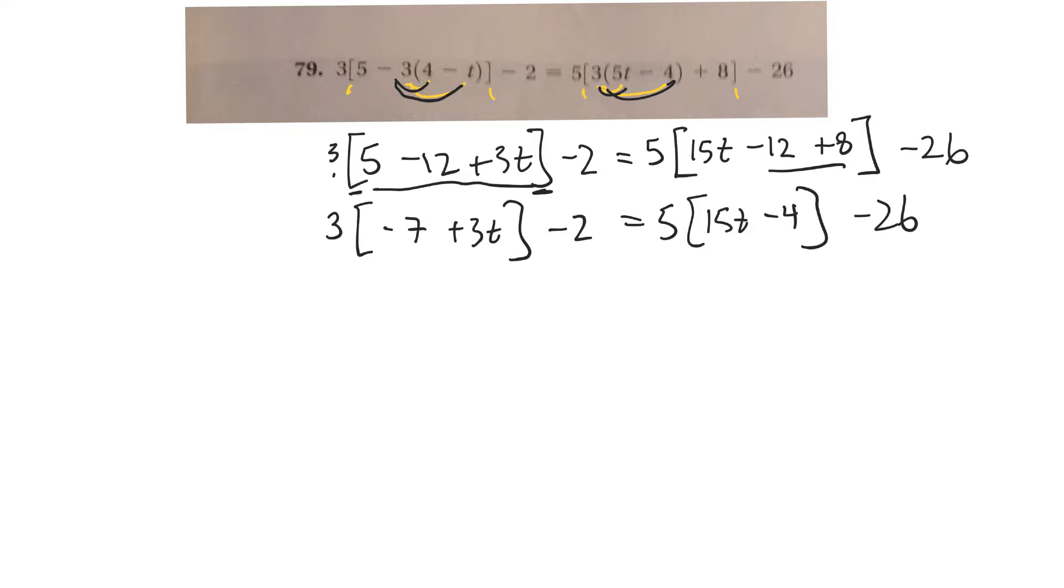So I'll be 15t negative 12 plus 8 negative 4 minus 26. Starting to hurt. I like it. Now I'll multiply through. So it'll be a negative 21 and a positive 9t minus 2 equals, multiply through, 75t minus 20 minus 26.